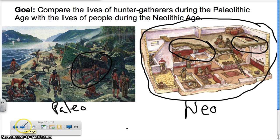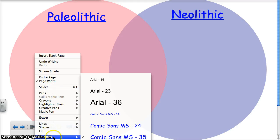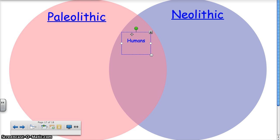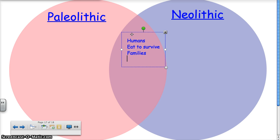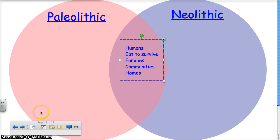Let's take a look at our lesson today — we're going to compare the Paleolithic and the Neolithic. Before we do anything, we need to talk about some similarities they both have. Well, they're both humans, just living differently. They have to eat to survive. They have families, they have communities, they have homes. Hunters and gatherers had homes — they were just easily collapsible and could be easily moved. Whereas in the Neolithic times, once they have farms, they decide they're going to stay put because they don't have to worry about where their food is going to come from.